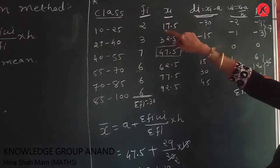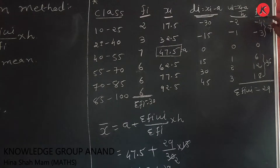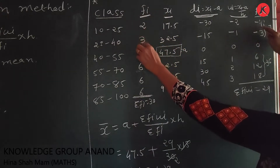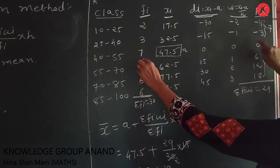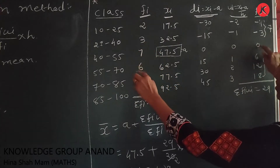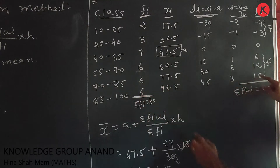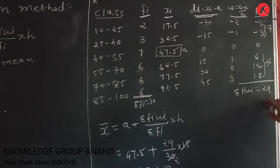Now we find the product fi × ui. Calculating: 2 × (-2) = -4, 3 × (-1) = -3, 7 × 0 = 0, 6 × 1 = 6, 6 × 2 = 12, 6 × 3 = 18. The negative sum is -7 and positive sum is 36, so Σfi·ui = 36 - 7 = 29.